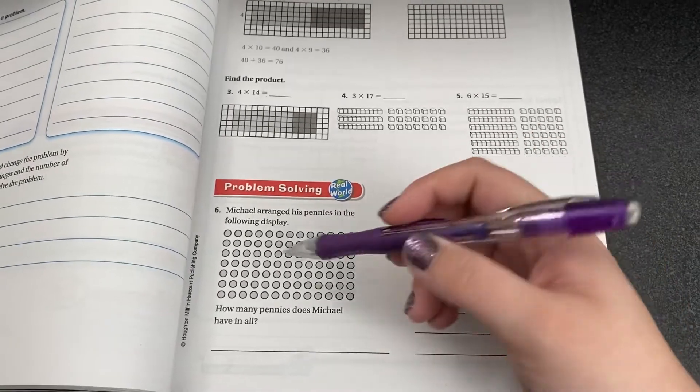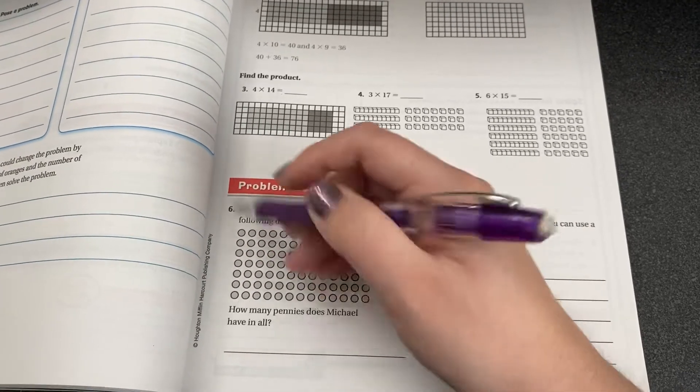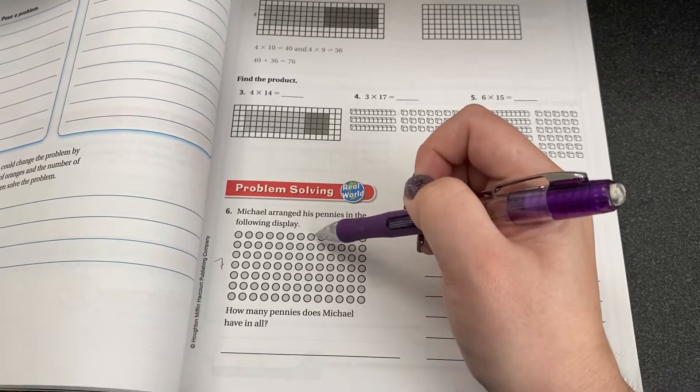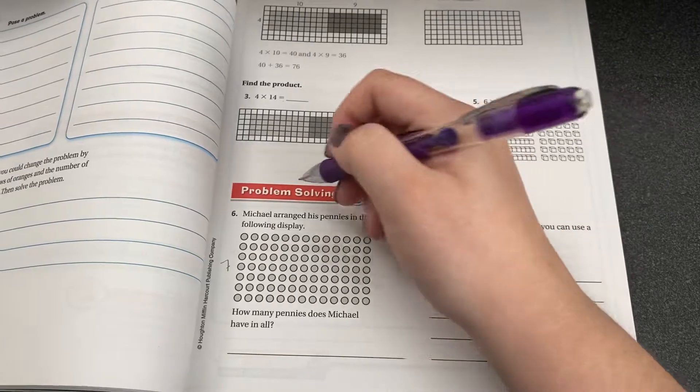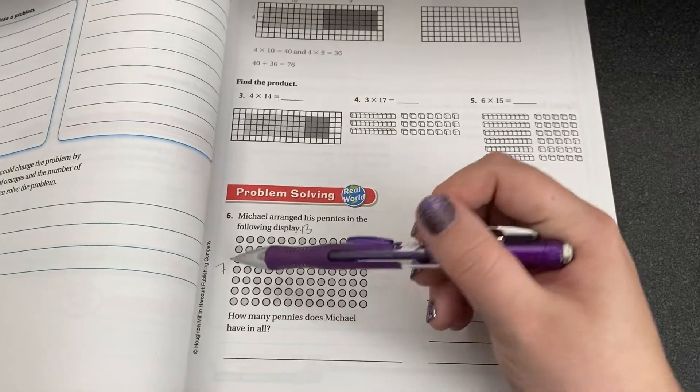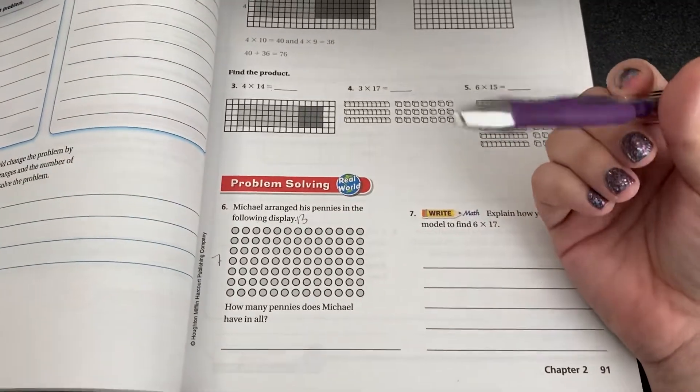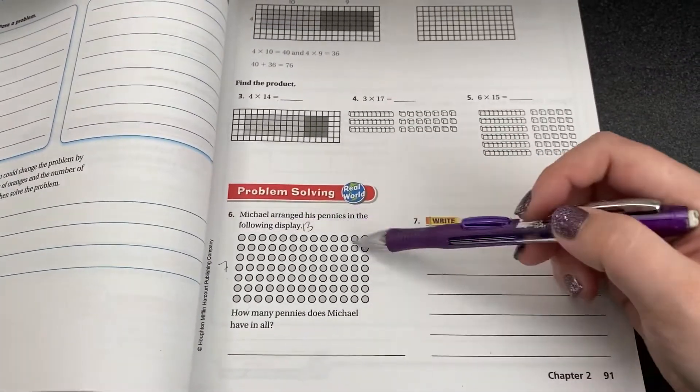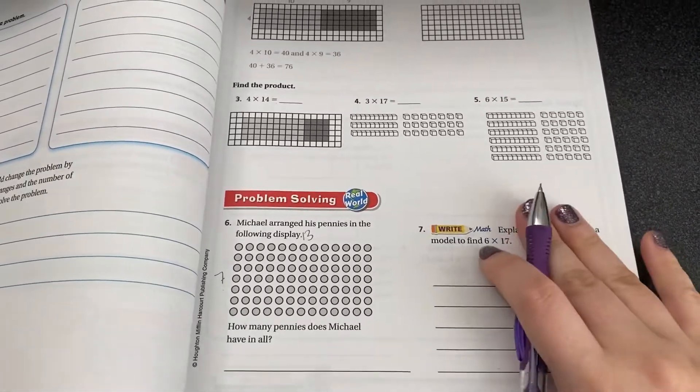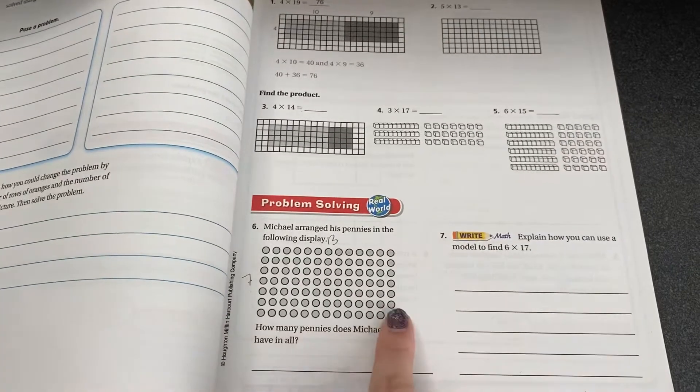It says Michael arranged his pennies in the following display. So these are pennies and he's got seven down and thirteen across. So he's got thirteen groups of seven or you can think of it as seven groups of thirteen rows. So I know I need to multiply seven times thirteen to figure out how many pennies are all together in this array.